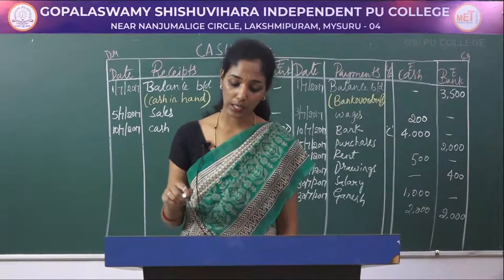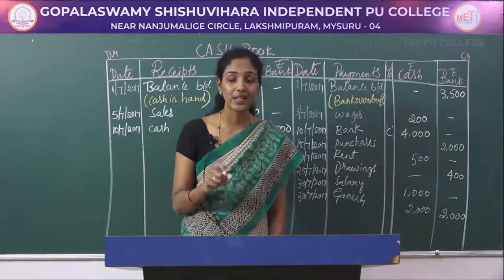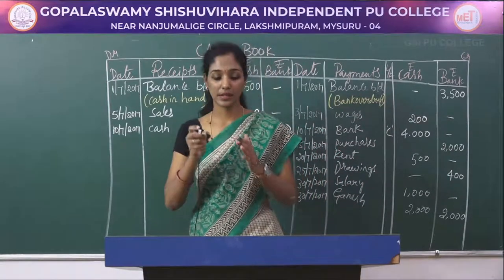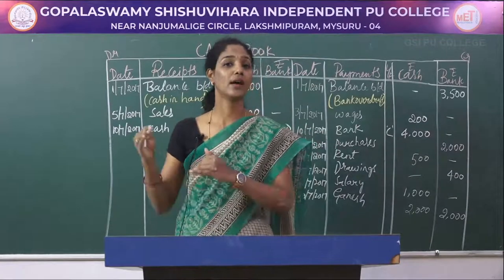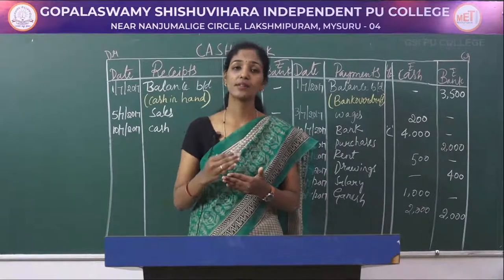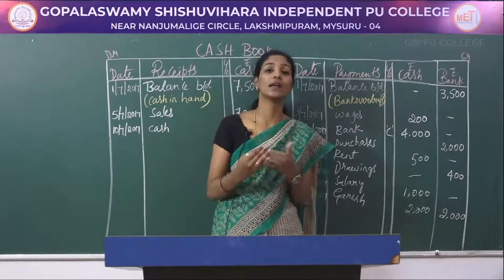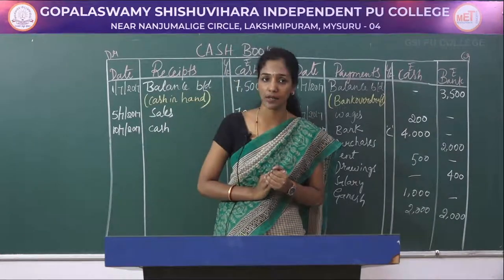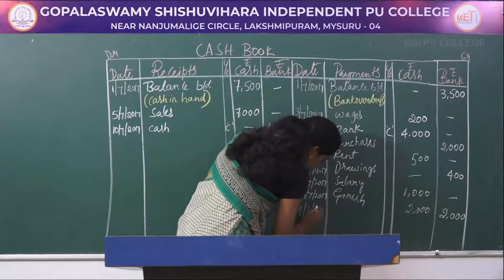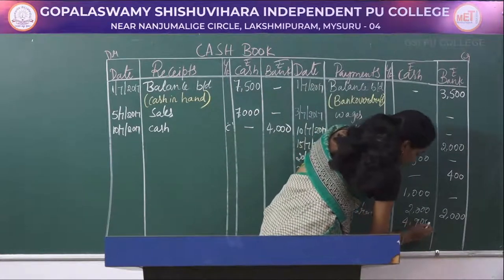As on 31/7/2017: paid to Jayram on account rupees 4900, discount received rupees 100. You have to ignore the discount received because it is not related to the double column cash book — discount received is always recorded in the journal proper. Consider only the cash paid to Jayram: write 'Jayram' for 31/7/2017 and enter rupees 4900 in the cash column.